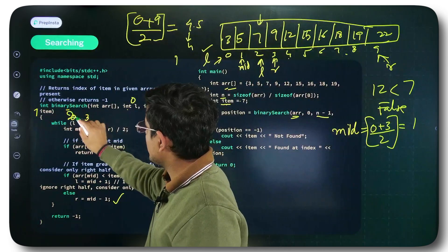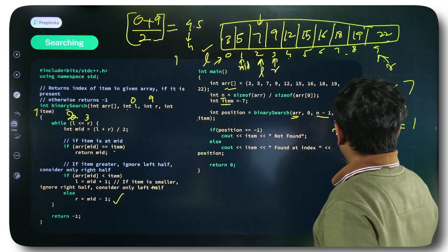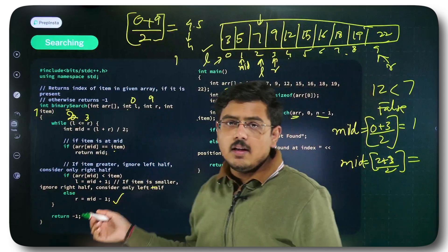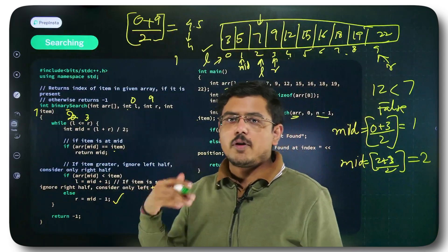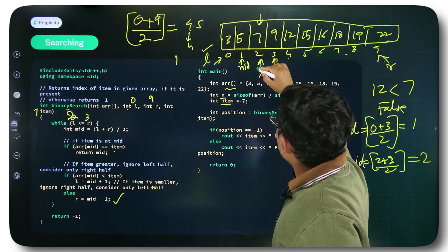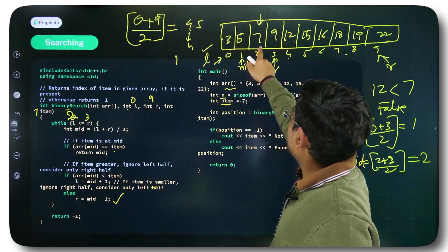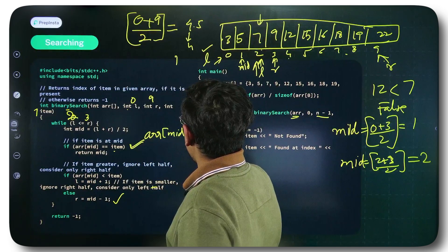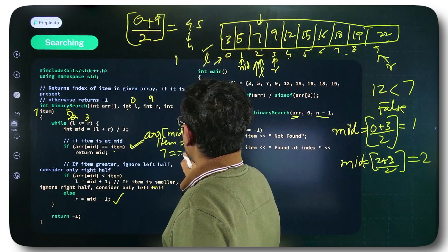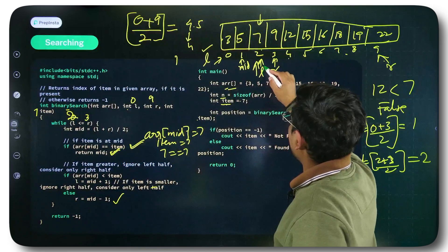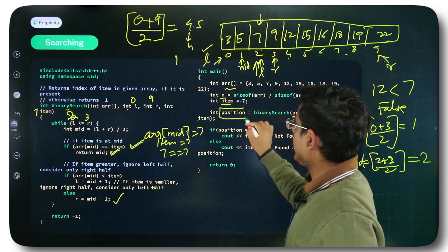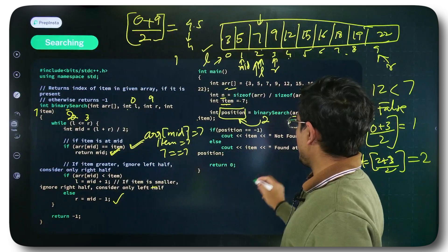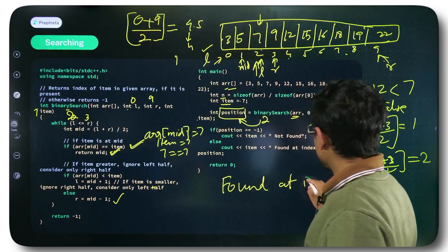So in the next iteration, this becomes 2 and from 2 and 3, we take mid of 2 plus 3 by 2. Now floor of it is nothing, this would become 2 because 2.5, the floor of it would become 2. Now, the mid would point to this particular location. As soon as mid points to this particular location, this becomes true because array of mid is 7 here and item is also 7 here. So 7 equal to equal to 7 is true. Hence, you return the mid. Mid is nothing but 2 right now. So the position, this particular place now gets 2 as the returned value. And here what you do is, you simply push this as the output. Found at index 2. This is binary search.